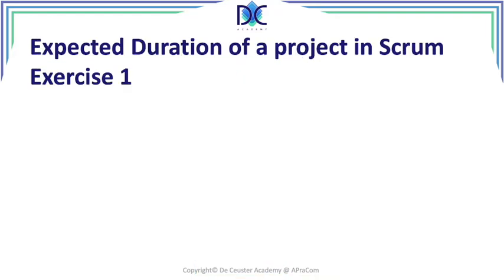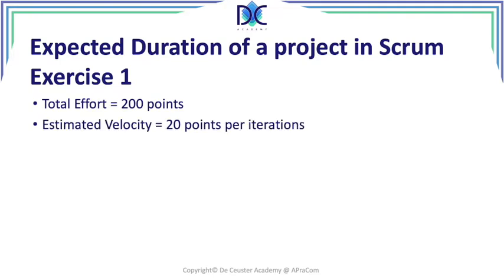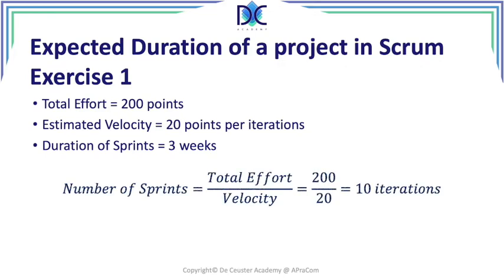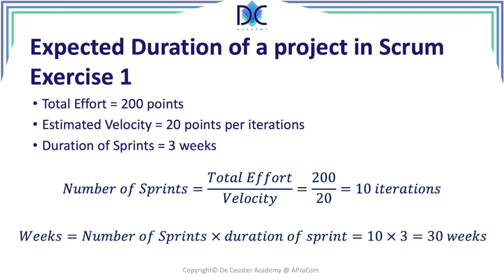When looking at Scrum, we want to understand the expected duration. Assume a total effort of 200 points, an estimated velocity of 20 points per iteration, and a sprint duration of three weeks. The number of sprints equals total effort divided by velocity: 200 divided by 20 gives us 10 iterations. With three weeks per sprint, that's 30 weeks in total. Once the project is underway, we can also calculate velocity and find how many sprints remain: remaining effort divided by calculated velocity gives the additional iterations still to complete.